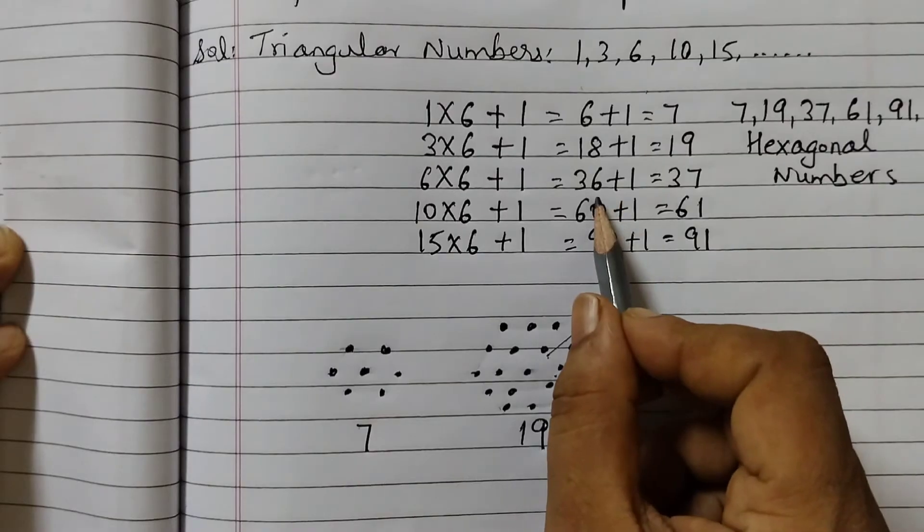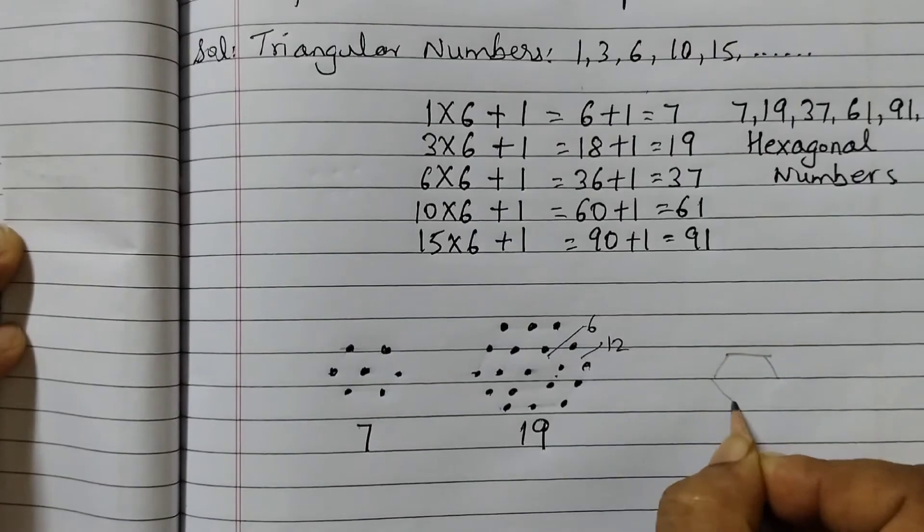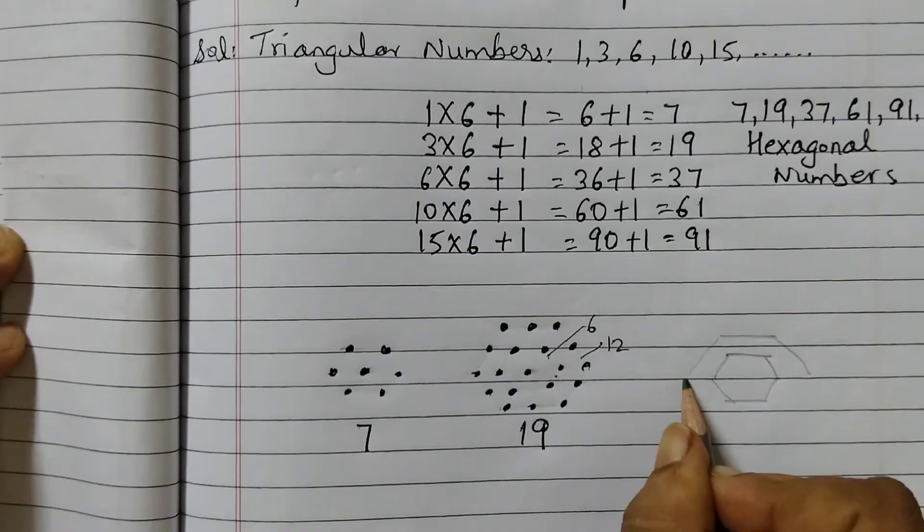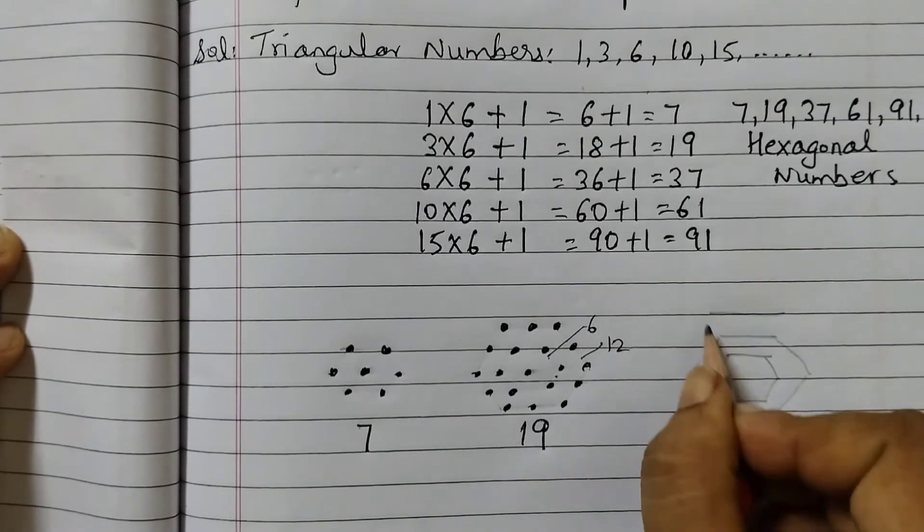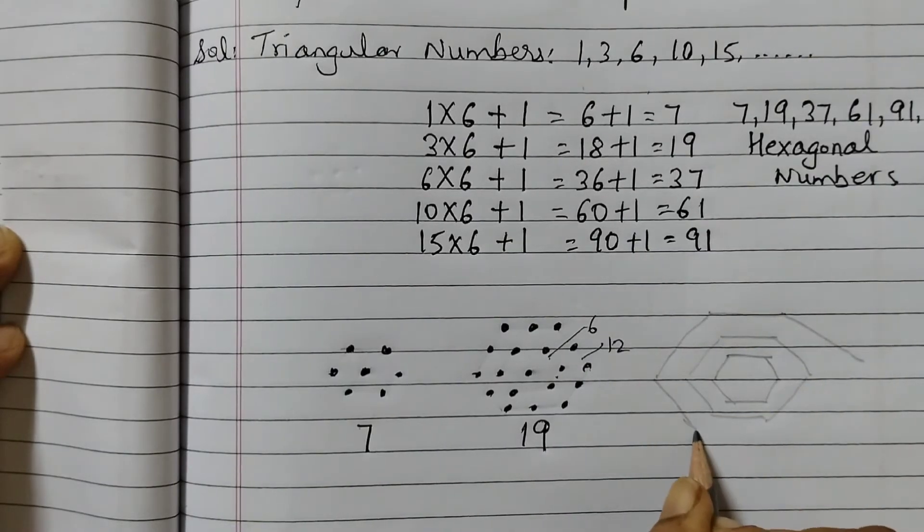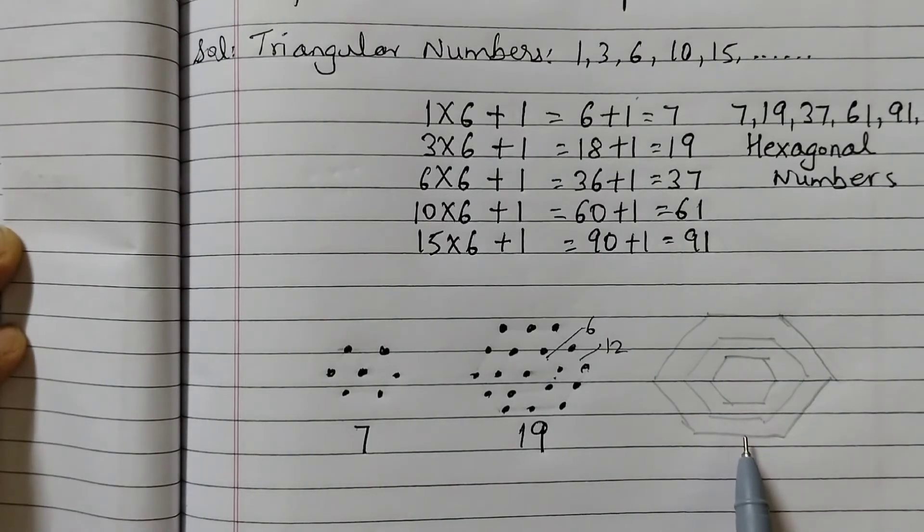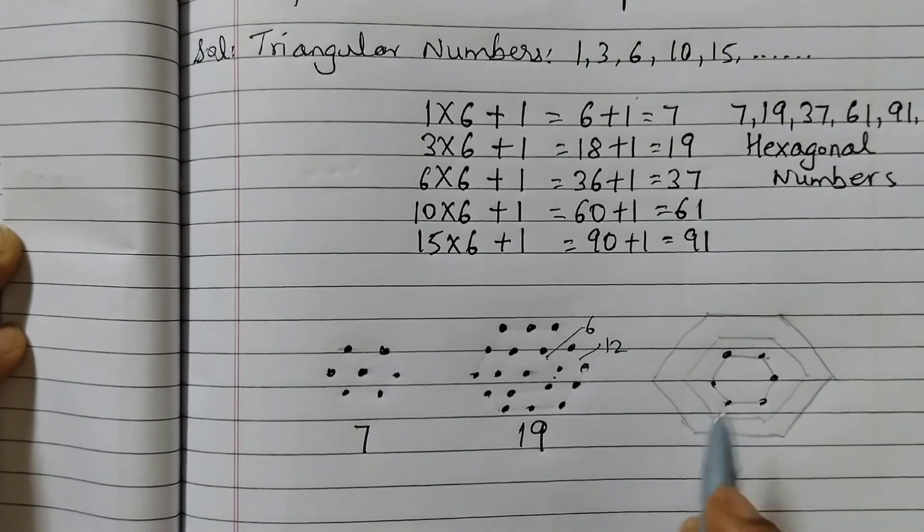Let's do one more. 36 plus 1. So for 36 we will draw three hexagons. We are drawing this hexagon so that we can easily put the dots. So first 1, 2, 3, 4, 5, 6. I am putting the dots in the corners and in the middle when required.